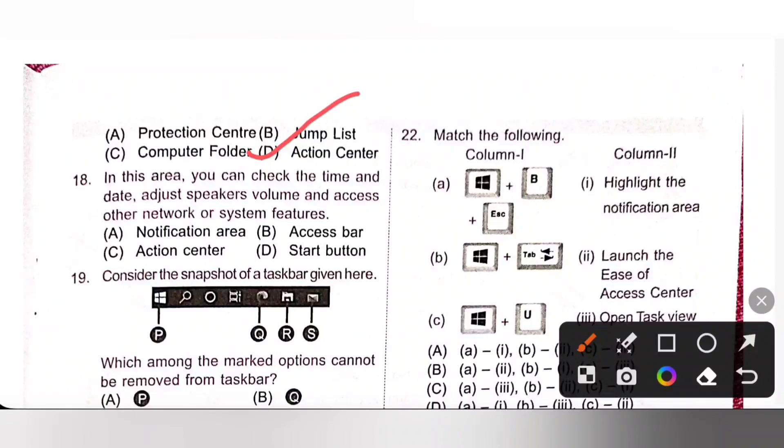In this area, you can check the time and date, adjust speaker volume and access other network or system features. We know that is notification area. Notification area is located at the far right end of the taskbar. So, option A.